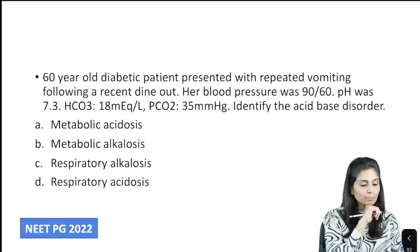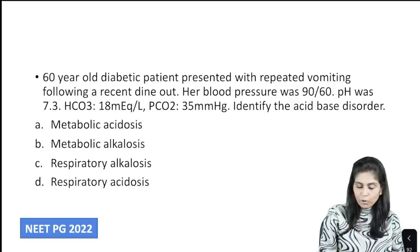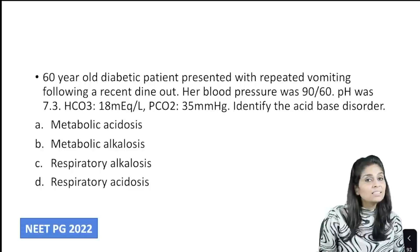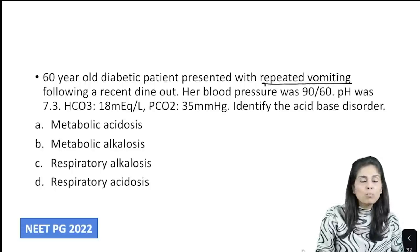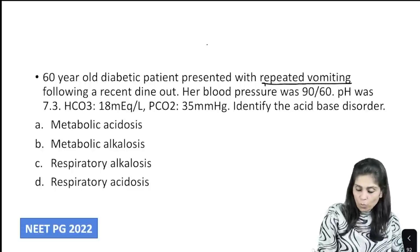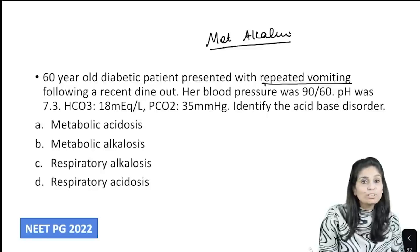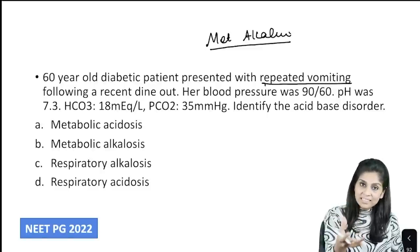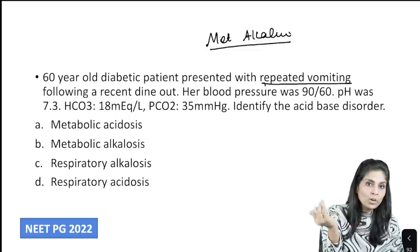Let's try answering this clinical case. A 60-year-old diabetic patient presented with repeated vomiting following a recent dine out. With repeated vomiting, the person vomits out acid, so you would expect metabolic alkalosis. Additionally, there is secondary hyperaldosteronism, so vomiting causes metabolic alkalosis.